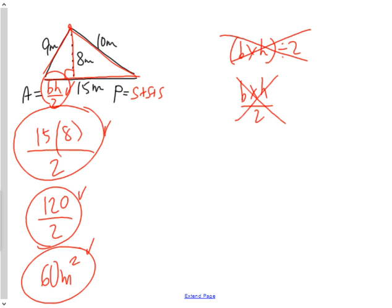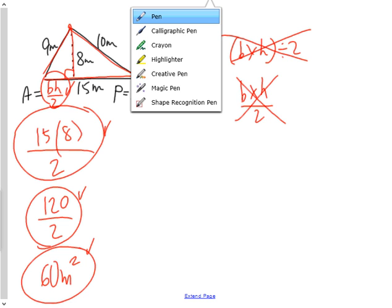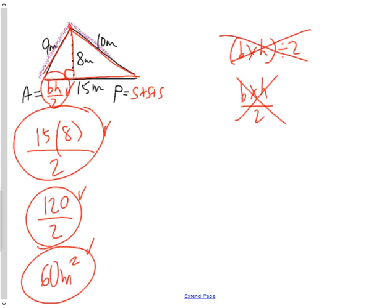The perimeter of a triangle is the distance around the outside — side plus side plus side. So 15 plus 10 plus 9 gives us 25 plus 9, which is 34 meters as the perimeter of that shape.